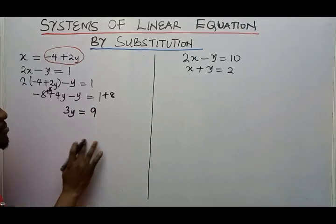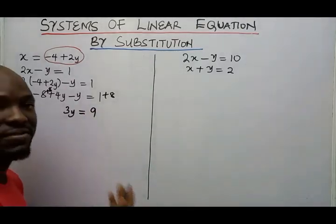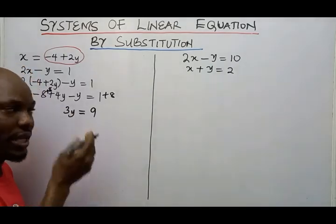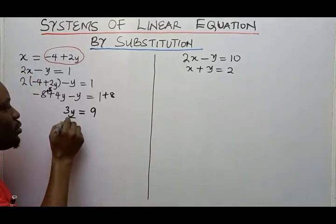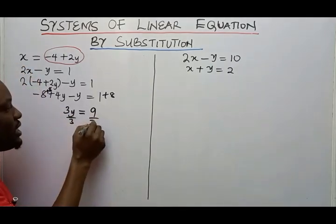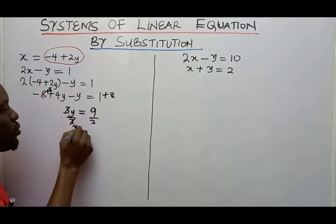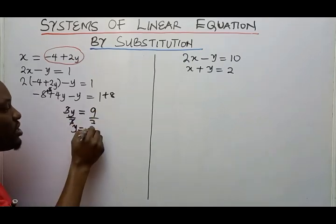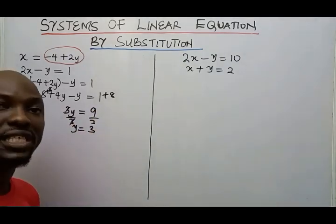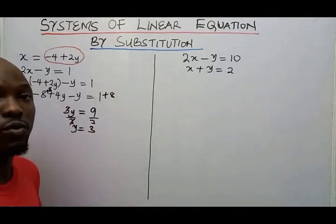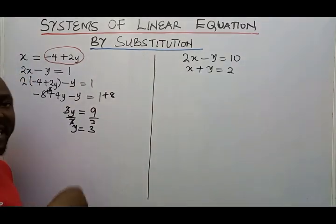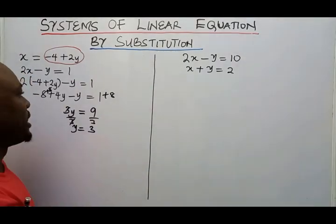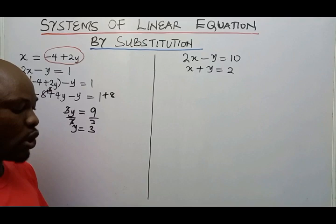Now if I divide both sides by 3, 3 cancels 3Y, and 9 divided by 3 gives me 3. So I've gotten the value of Y as 3. Now the next thing I want to do is find the value of X.